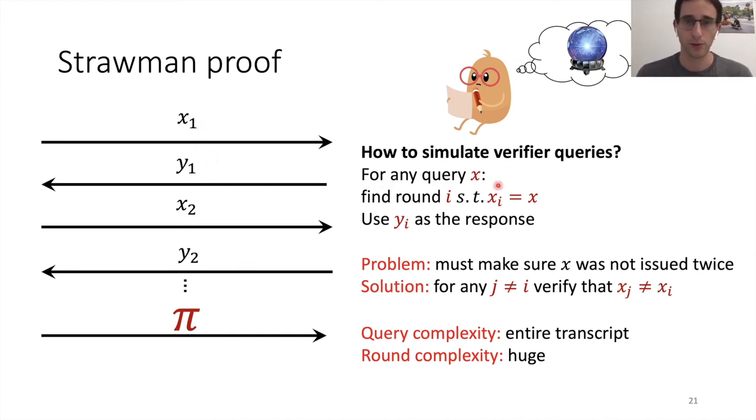Just simulating queries is easy. We can just answer randomly. But we want this to be consistent with the answers we gave to the prover. So this is what we're going to do. Suppose the argument verifier performs a query x. We're going to find a round i where xi equals x. If no such round exists, then we can just answer randomly. That's fine. But if we found such a round, then we're going to use yi as a response. There is a small problem here, but an important problem. We must make sure that x was not queried twice. So this is not allowed in the random oracle. We do not want to allow the prover to query x, get a response, and say, hmm, you know what? I don't like this response so much. So let's query x again and get another response.